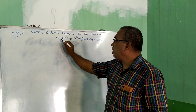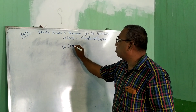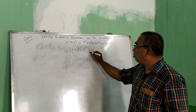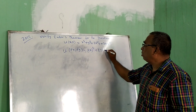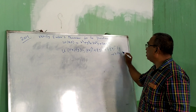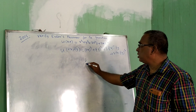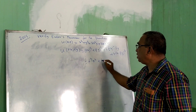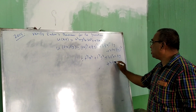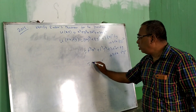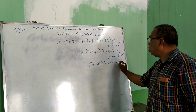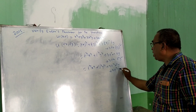So just I am showing once again. U(x,y) is equal to this, therefore U(tx, ty) — in place of x I am just putting tx — that is (tx)³ + (ty)³ + 3(tx)²(ty) + 3(tx)(ty)². That is t³x³ + 3t³x²y + 3t³xy².